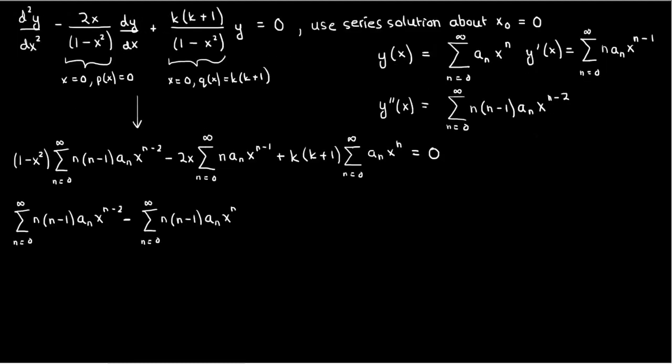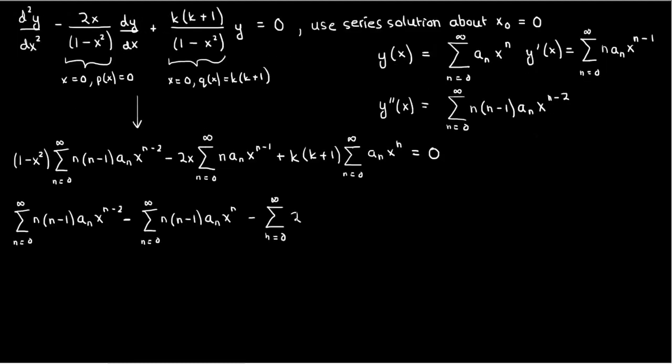We can simplify by expanding everything out — the 1 minus x squared and the 2x terms. There's still a problem because the powers on x in each sum aren't consistent. There are three series with an exponent of n, and only one series where x is raised to the power of n minus 2, so the simpler route is to change that n minus 2 to an n.